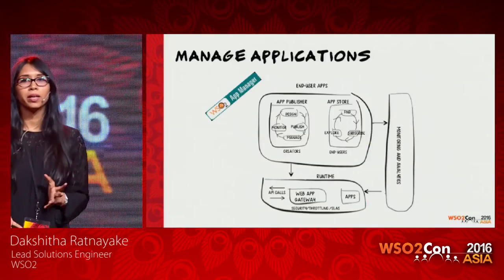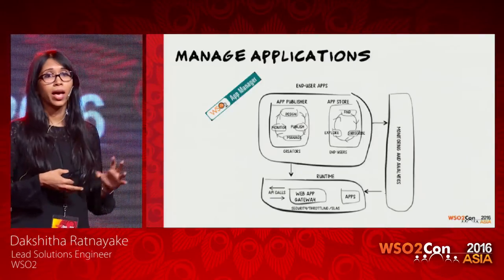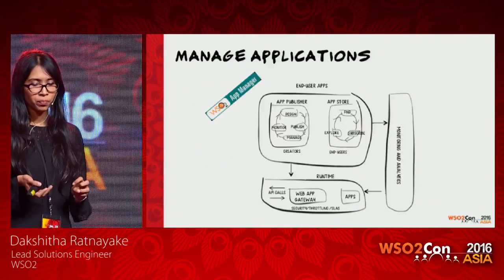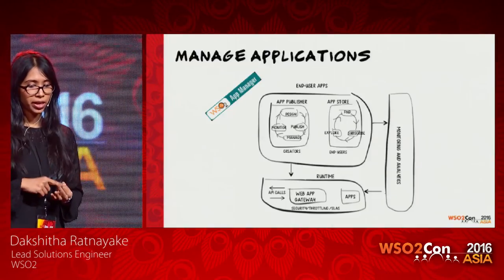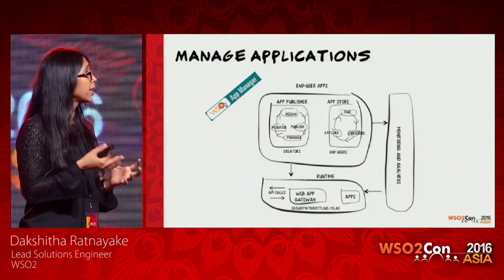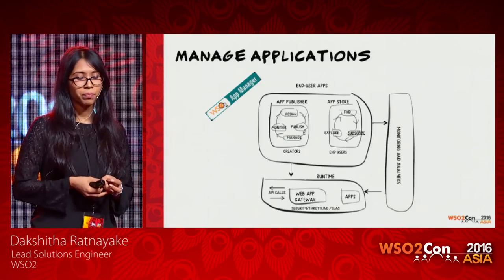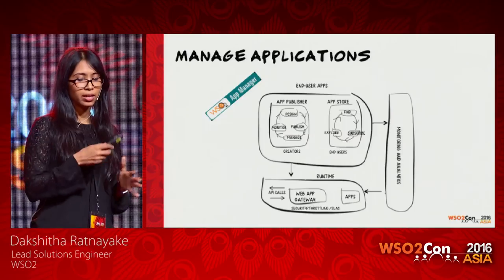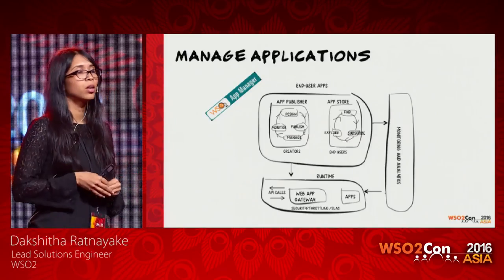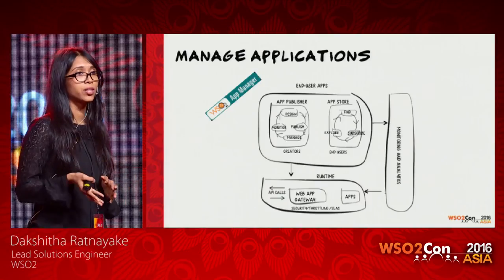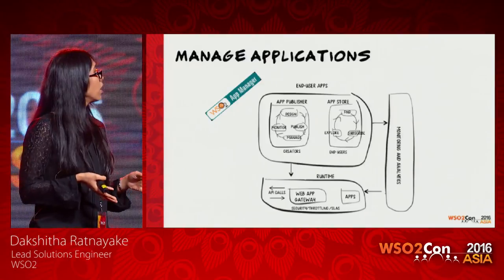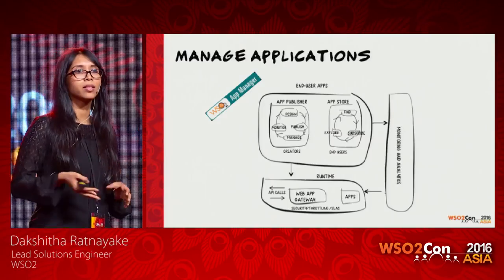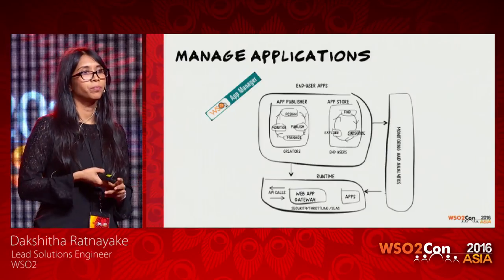Once you've created your applications, you may want to manage them. The WSO2 application manager has components including an application publisher and application store for cataloging and managing applications and seeing who's accessing them. During runtime, API calls hit a proxy — the web app gateway — which dispatches requests to the applications. If you've subscribed to several applications, the application manager can enable single sign-on so you can log in once and access all those applications seamlessly.